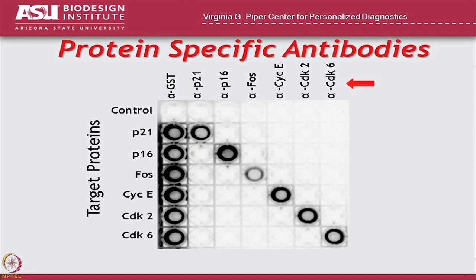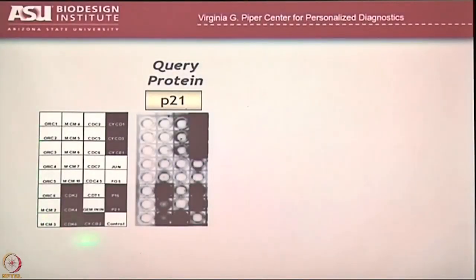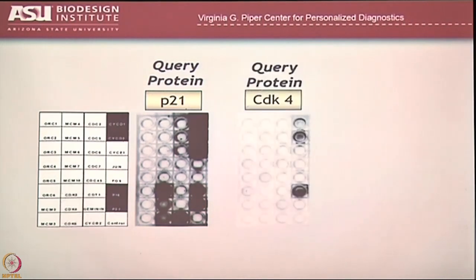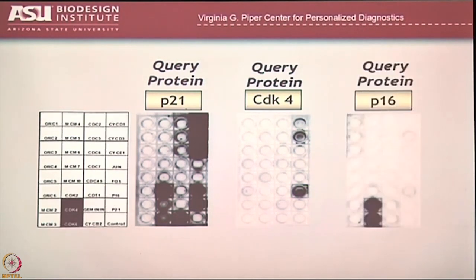Depending on which antibody you use, you only get that signal. You can use the same approach to look at interaction queries. Here's a bunch of different proteins on a chip — in quotes, because these are actually the wells of a 96-well dish. If I probe with protein P21, it binds to all of these CDKs, to these cyclins, and it binds to itself. If you probe with a different query, CDK4, it's going to bind to the cyclin D's and to P16. And if I probe with P16, it's going to pick up these CDKs. Using different queries, I get different interactors.